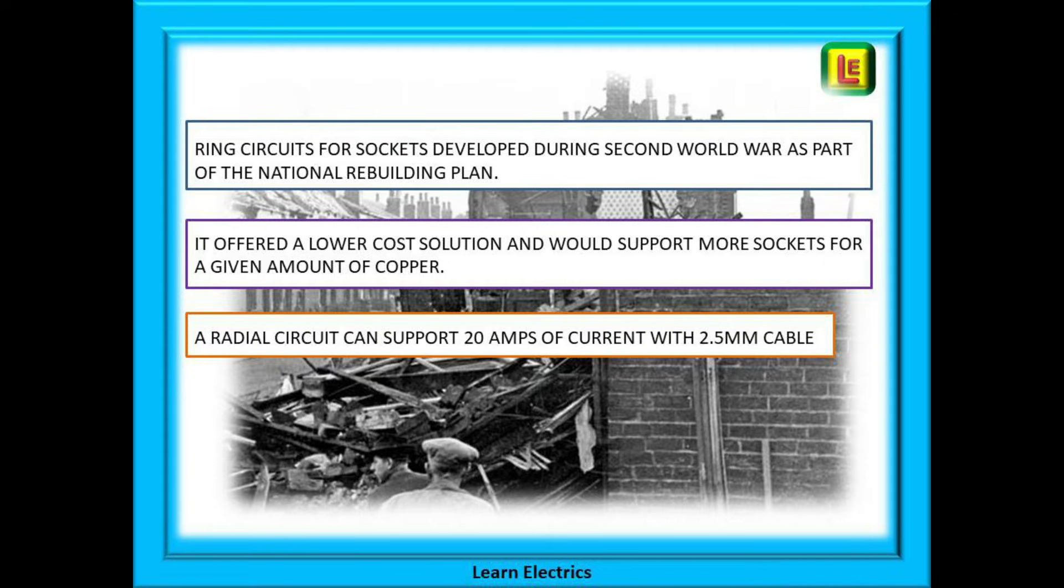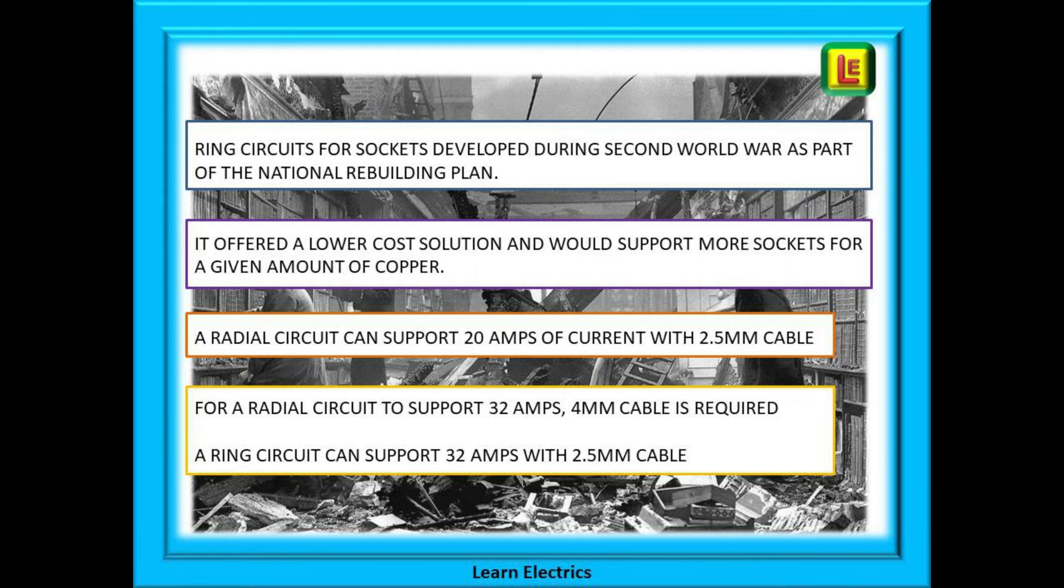A radial circuit using today's breakers can support 20 amps of current with two and a half millimeter cable. For a radial circuit to support 32 amps, in other words more sockets, the cable size would have to be increased to four millimeters. Bigger cable sizes mean more copper used and this was the problem for the think tank.